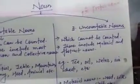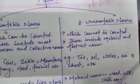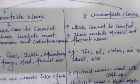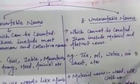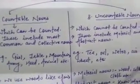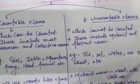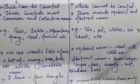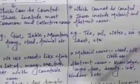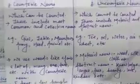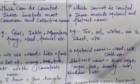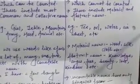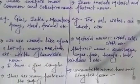Uncountable noun — as the name makes clear — is that which cannot be counted. Under this come material noun and abstract noun. For example: tea, water, air, wit, etc. Material noun examples include: wood, silk, cloth, etc. Abstract noun examples include: knowledge, anger, fear, beauty, love, kindness, etc.